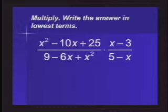Multiply. Write the answer in lowest terms. x squared minus 10x plus 25 over 9 minus 6x plus x squared times x minus 3 over 5 minus x.